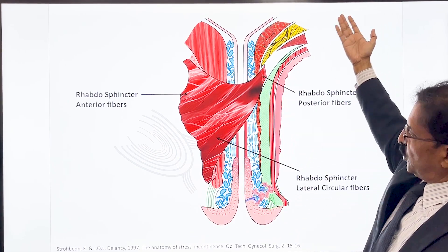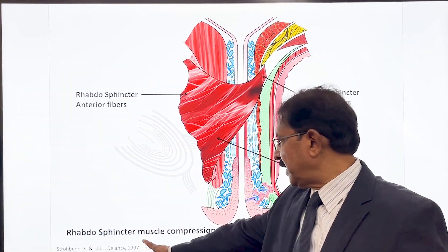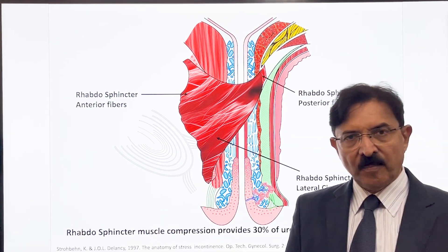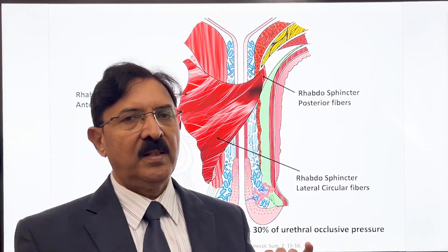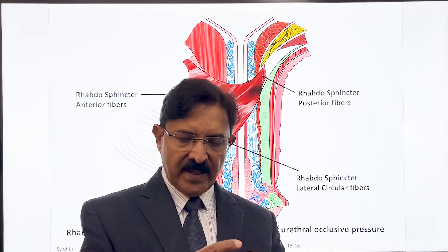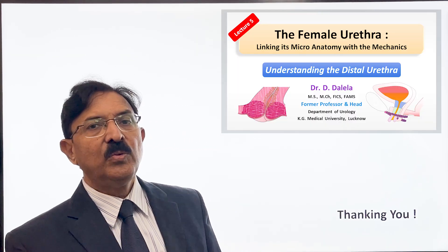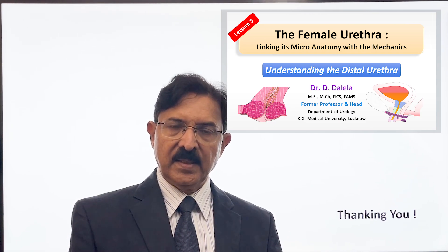That is how the female urethra is obliquely placed — the rhabdosphincter pulls it back, giving obliquity to the female urethra. Remember that 30 percent of urethral occlusive pressure comes from the rhabdosphincter muscle compression, 30 percent from the submucosal cushion, 30 percent from smooth muscle tone, and the remaining 10 percent from elastic tissue and the urethral submucosa by keeping tissue volume. Thank you for your patient listening. In the next video we will move to the distal non-muscular part of the urethra.